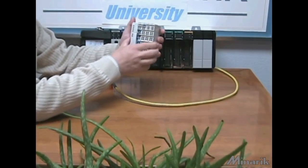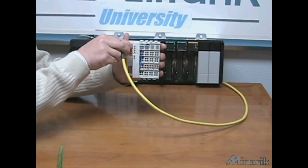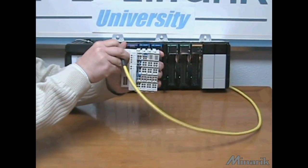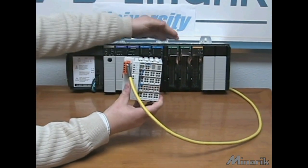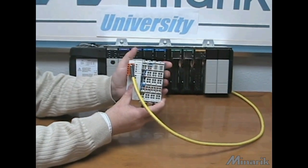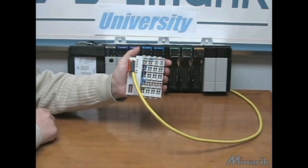We can take a distributed I.O. node and plug the network cable in. Now all the I.O. points that used to have to run all the way back to the PLC now connect here locally on the machine.